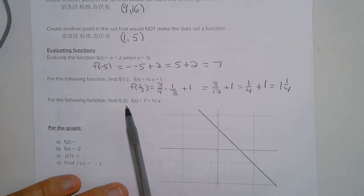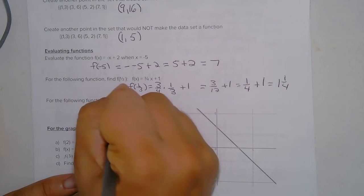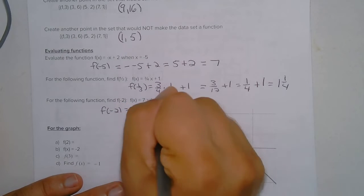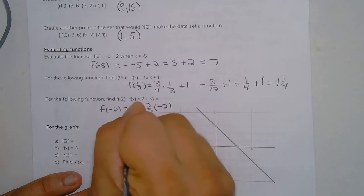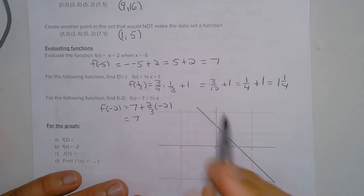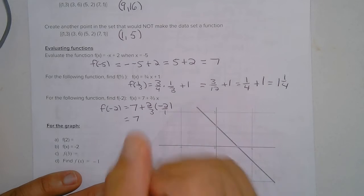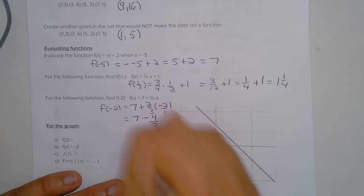Then here we're going to evaluate f of negative 2. So f of negative 2 is equal to 7 plus 2 over 3 times negative 2 times negative 2. So then that's going to equal 7. And then here, if I multiply those fractions, negative 2 times negative 2 would be minus here, 4 over 3.